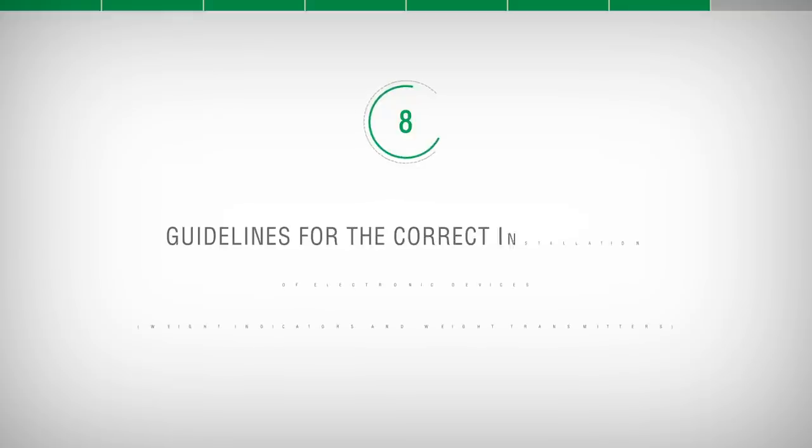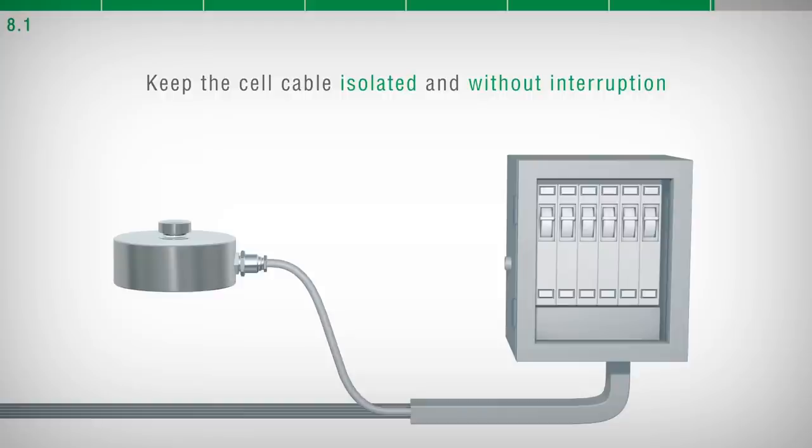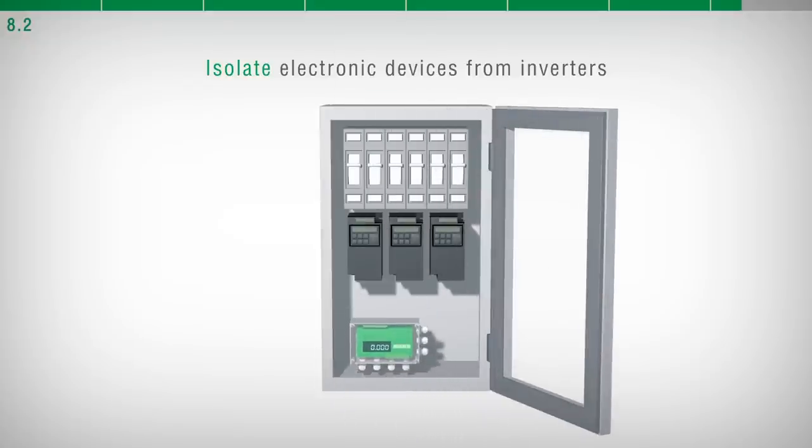Guidelines for the correct installation of electronic devices, weight indicators, and weight transmitters. The load cell cable must be autonomous and not pass through the wire way with other cables. It is recommended to connect it directly to the weight indicator or transmitter without interruptions and without terminal boards. It is recommended not to install electronic devices in an electrical panel containing inverters.